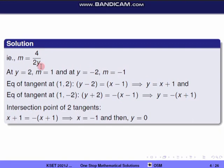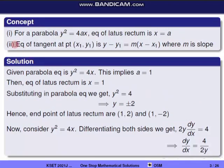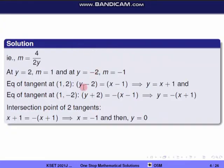At y equal to 2, slope m equals 1. At y equal to minus 2, slope m equals minus 1. The tangent at point (1, 2) is: y minus 2 equal to 1 into x minus 1, which simplifies to y equal to x plus 1.